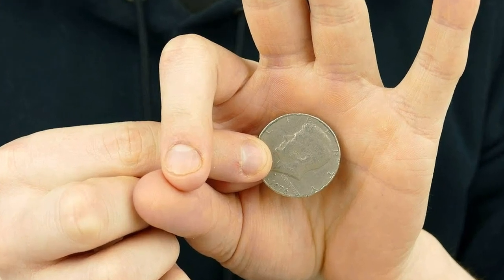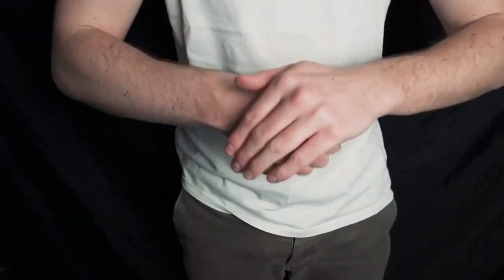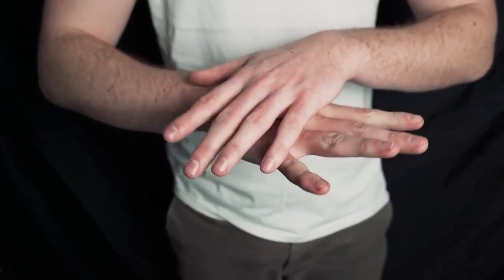In this intriguing magic trick, the magician begins by showcasing a coin. They place the coin into their right hand and give it a gentle rub. Astonishingly, when they open their hand, the coin has magically jumped onto the back of their hand.